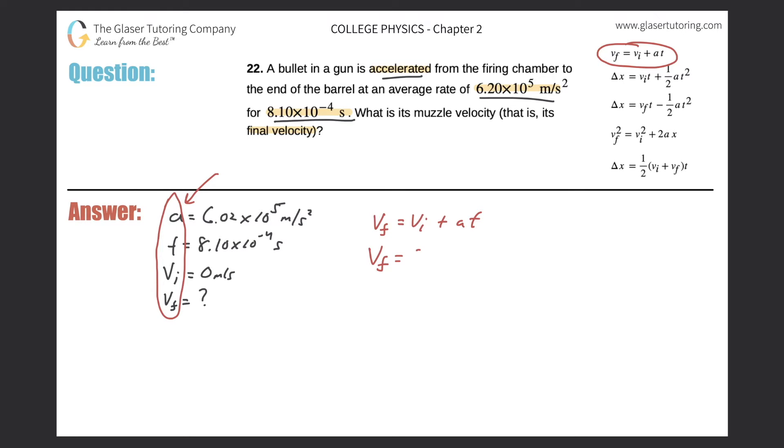So we're looking for the final velocity. So let's leave that as VF. The initial velocity is zero. The acceleration in the problem is going to be 6.02 times 10 to the five meters per second. I'm just going to leave out the units for now just to make things neater. And then the time, it says that it's 8.10 times 10 to the minus four seconds.